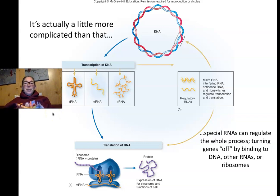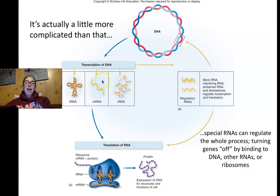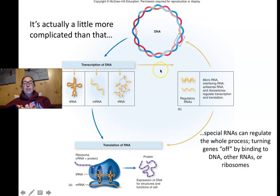Beyond making mRNAs, transcribed RNAs can also feed back and inhibit transcription or translation — these are called regulatory RNAs. They have complex regulatory functions, turning gene expression on and off. Small regulatory RNAs like microRNAs and antisense RNAs also have therapeutic value. For example, the vaccine company Moderna started in the 1980s-90s working with RNA therapeutics — so mRNA vaccine technology isn't entirely new, having been researched for about 30 years before the COVID-19 vaccine.